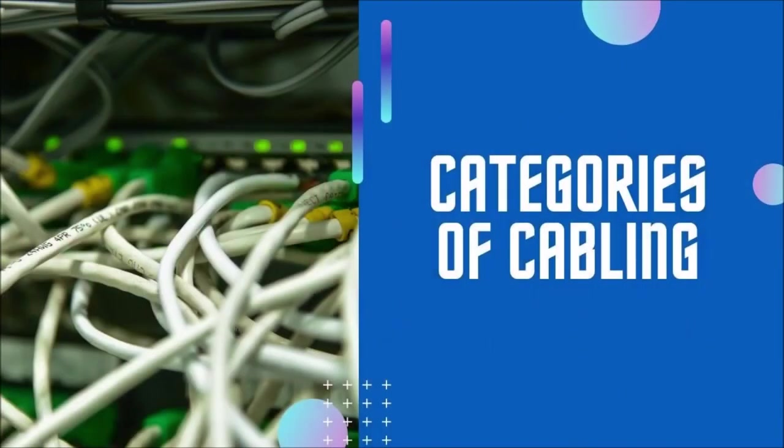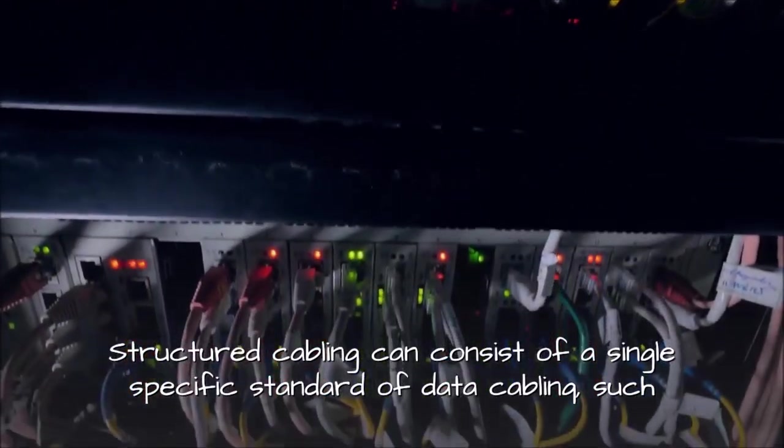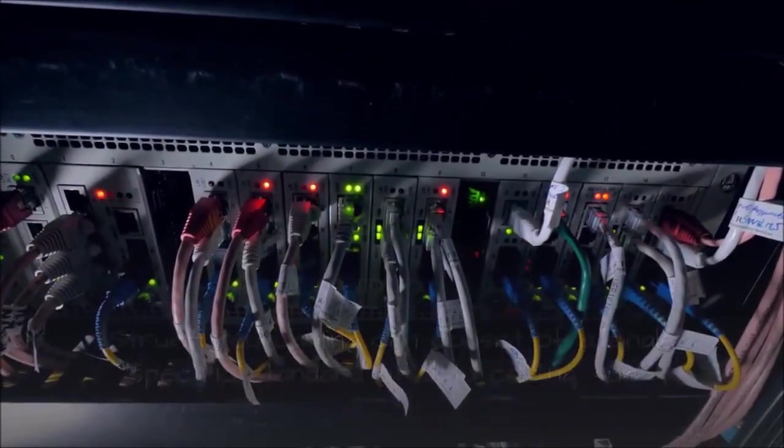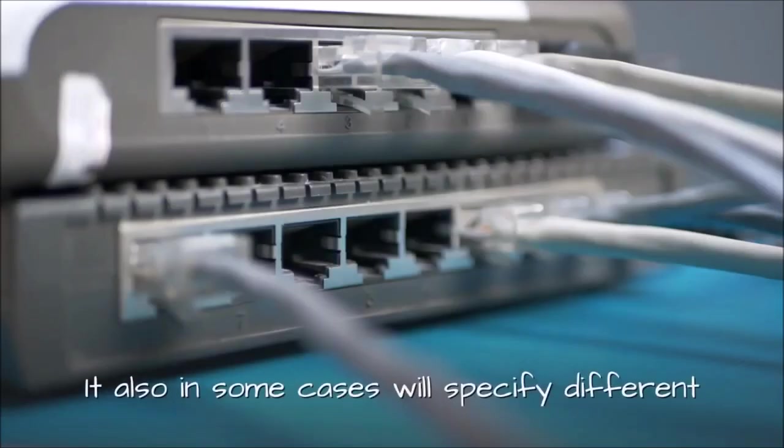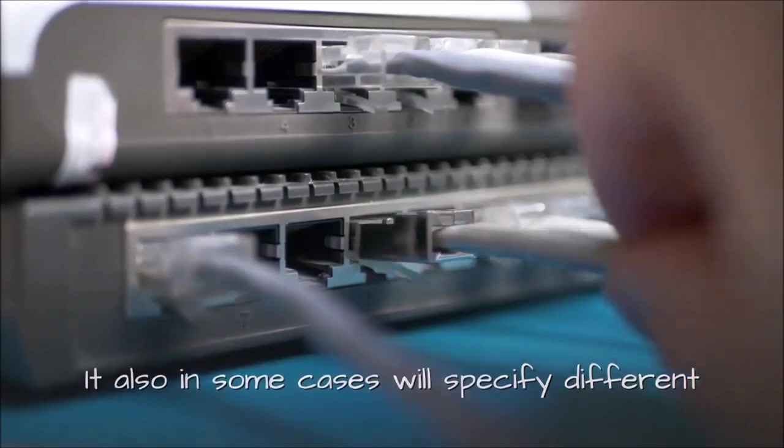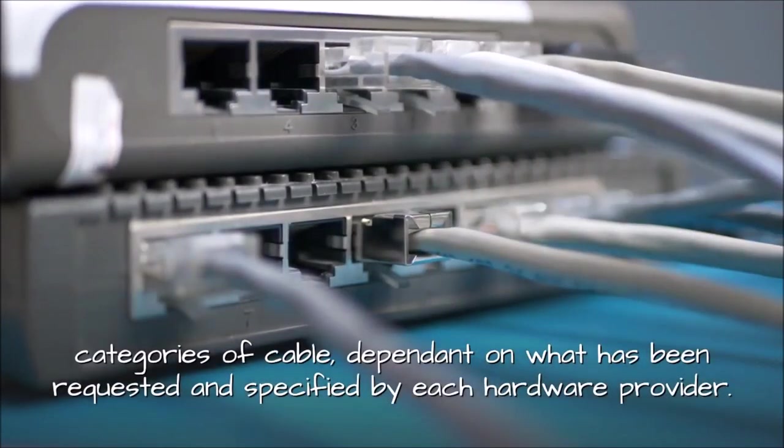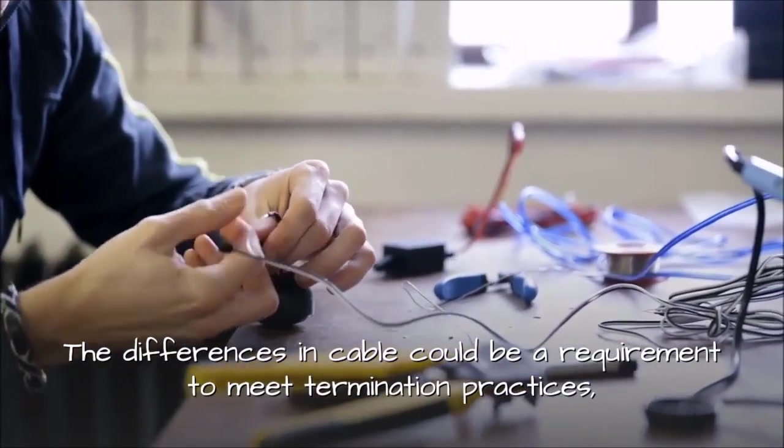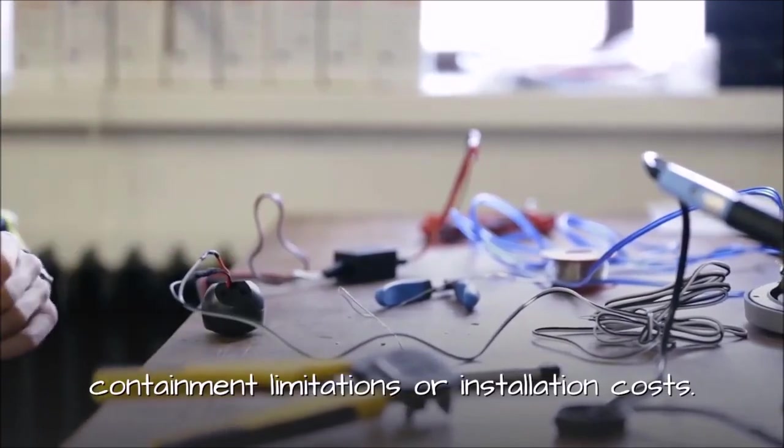Categories of cabling. Structured cabling can consist of a single specific standard of data cabling, such as CAT5e, CAT6, CAT6a or fiber optics. It also in some cases will specify different categories of cable, dependent on what has been requested and specified by each hardware provider. The differences in cable could be a requirement to meet termination practices, containment limitations or installation costs.